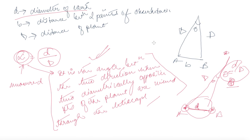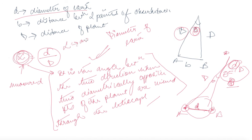In this way, you can calculate the distance D. You already know the diameter of Earth. Since alpha is very small but known, and using the relation D equals diameter divided by alpha, we can easily measure the distance to the planet. Therefore, D equals the diameter of Earth divided by alpha, and this gives us our answer.